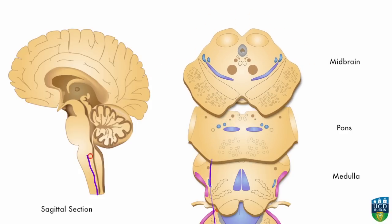As the second order neuron enters the brainstem, the collection of fibres is referred to as the spinal lemniscus.